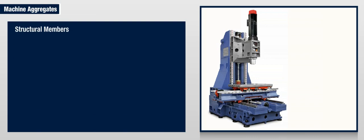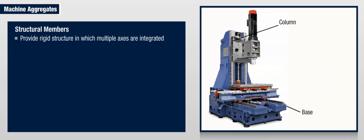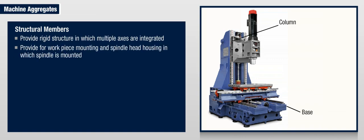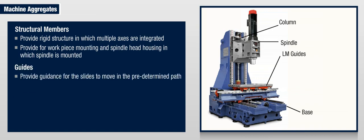Structural members like column, base, table, etc. provide a rigid structure in which multiple axes are integrated. They provide for workpiece mounting and spindle head housing in which the spindle is mounted. Guides provide guidance for the slides to move in the predetermined path.